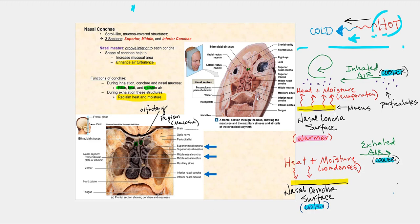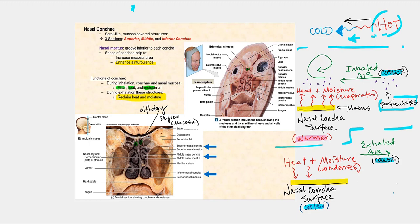When we breathe in, that air will be cooler and filled with particulates. The scroll-like nasal conchae create turbulence, which enhances the filtration process. The particulates are heavier, and as the air swirls around the nasal conchae, those particulates fall towards the surface of the respiratory mucosa, which has a thin lining of mucus from goblet cells and seromucosal glands. Mucus is sticky, so those particulates attach to that sticky surface, filtering out the air.